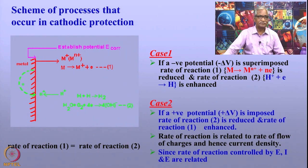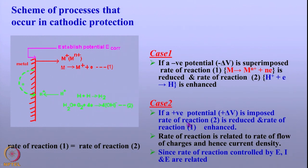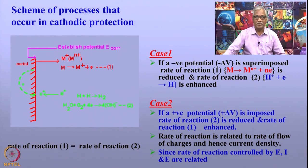Let us look at the second case. If I am going to make this potential slightly more positive by applying a relatively positive bias on the metal surface, then what could happen? Reaction 1 will increase because you are taking the electrons out — you have biased the surface with positive potential. This reaction increases, and it is very obvious that the rate of the second reaction will decrease, because the electrons are starved from the surface. So, applying a positive potential increases metal corrosion and decreases the reduction reaction. This is the fundamental understanding of any electrochemical process.